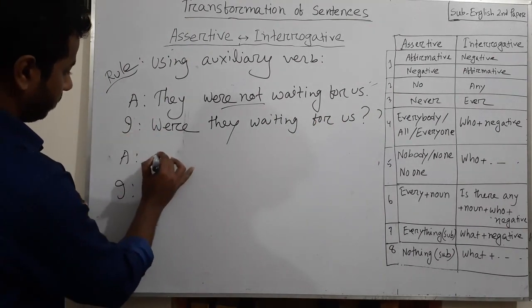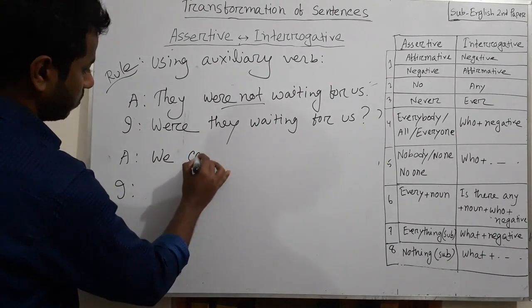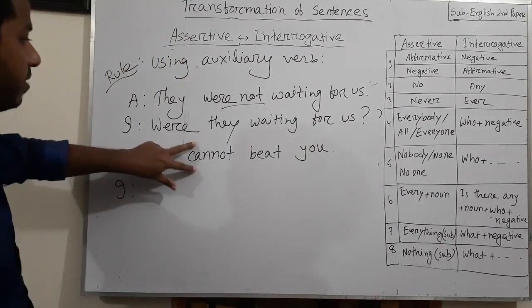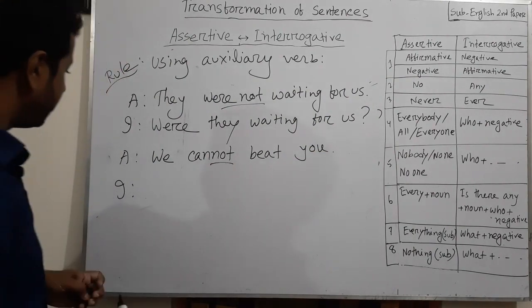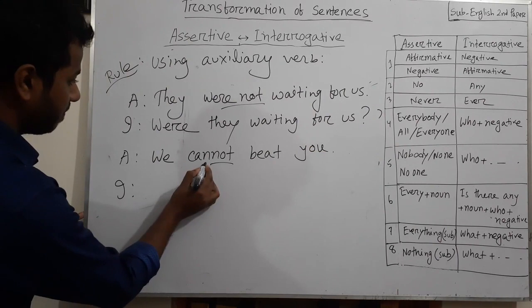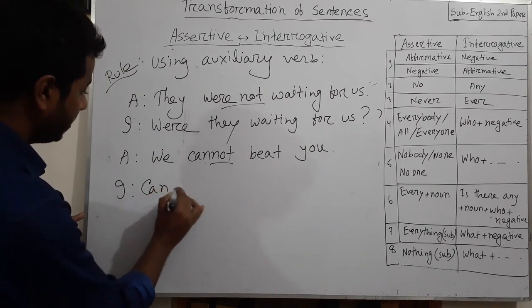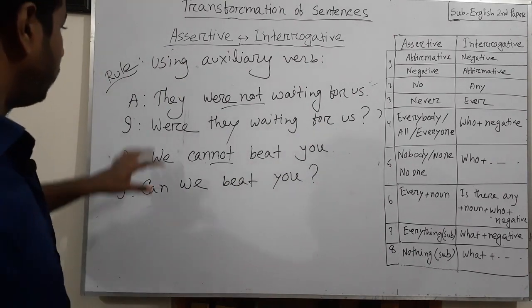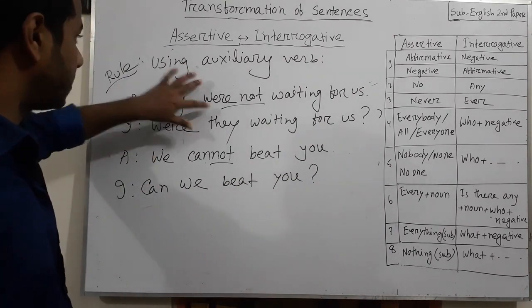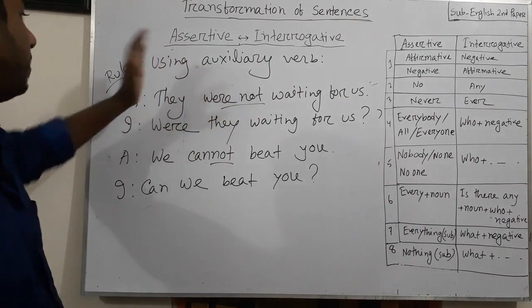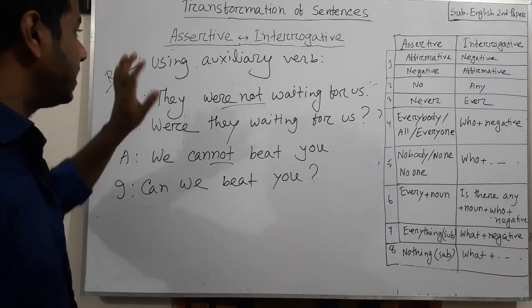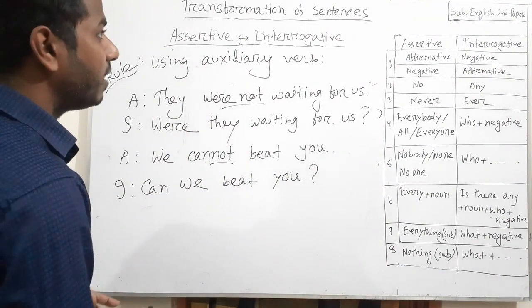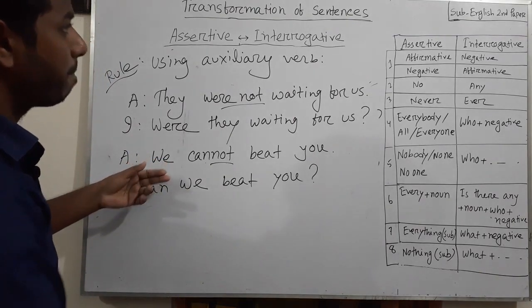Another example: 'We cannot beat you.' This is a negative form. So the interrogative sentence will be in affirmative form, and auxiliary verb will be before the subject: 'Can we beat you?' So if assertive sentence is affirmative, interrogative will be negative. If assertive sentence is negative, interrogative will be affirmative. The auxiliary verb goes before the subject in both cases.